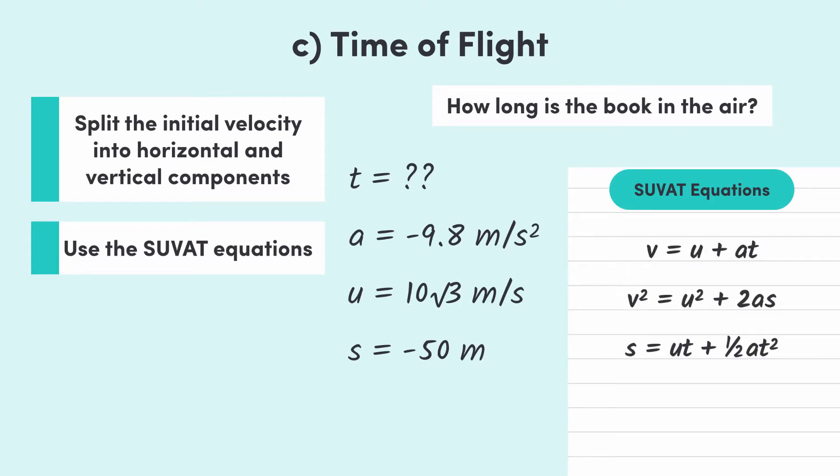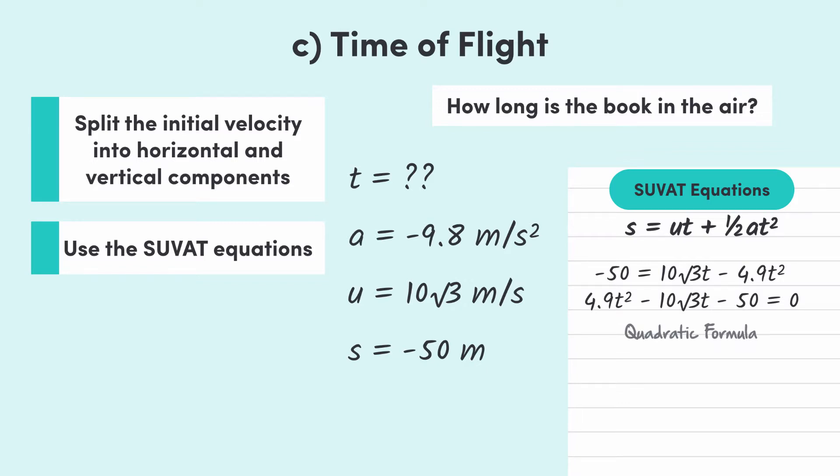we can use the equation s equals ut plus half at squared. Subbing in values, we get that negative 50 equals 10 root 3 times t minus 4.9 t squared, which rearranges to give 4.9 t squared minus 10 root 3 t minus 50 equals 0. Using the quadratic formula, we get two answers for t: 5.4 seconds or minus 1.9 seconds. But since time has to be positive, we can say that t equals 5.4 seconds.